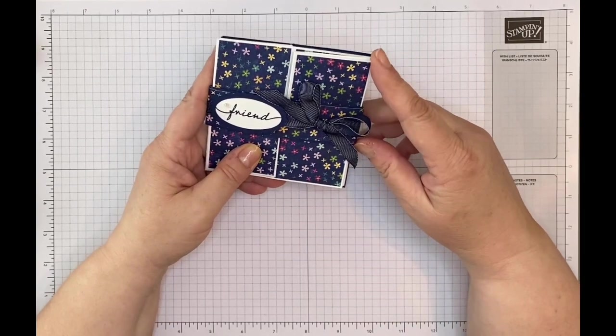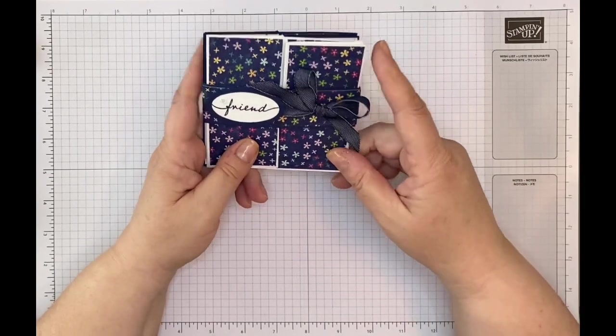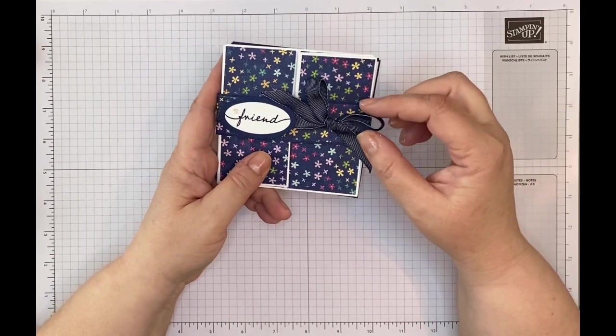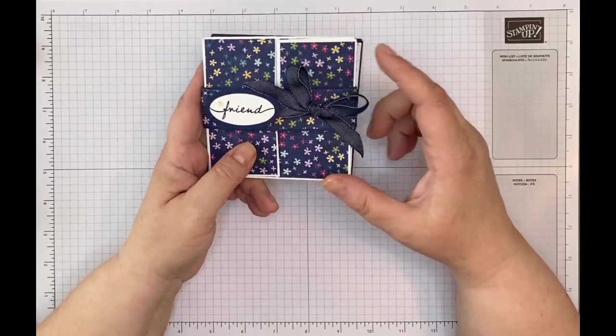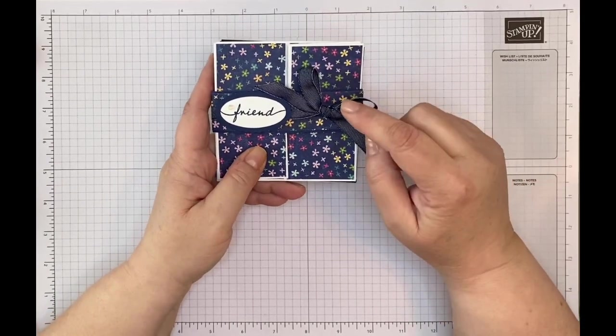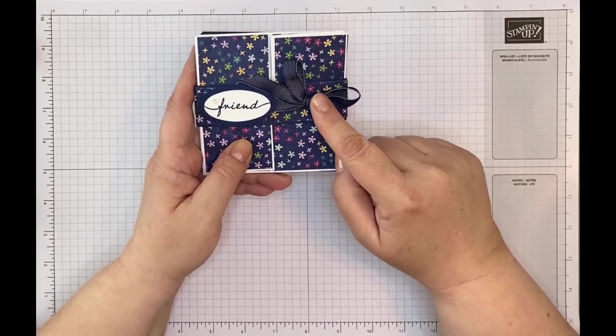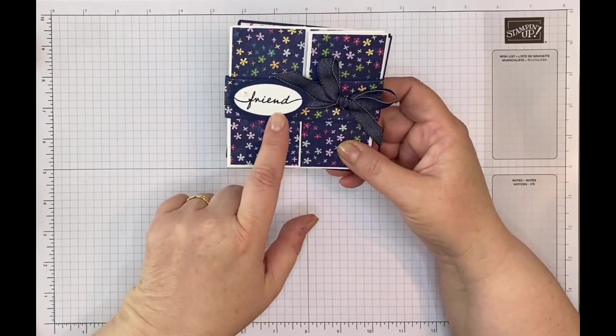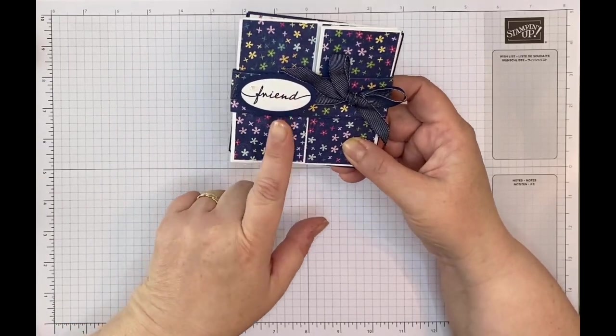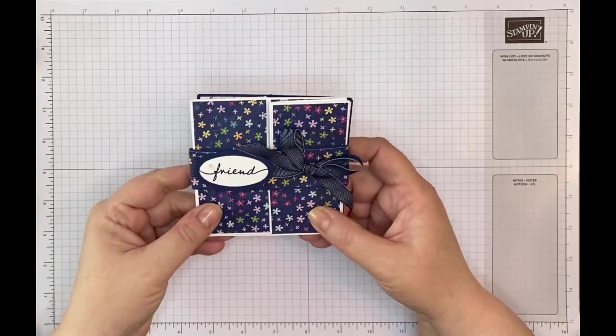This paper is from the new Hues of Happiness designer series paper and that's in the new annual catalog. This is a denim ribbon out of the mini catalog. I love this denim ribbon. And I've used the double oval punch here as well, which is in the annual catalog.